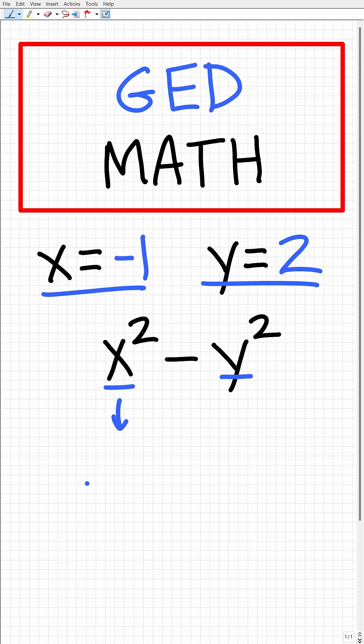So this is how it's going to look: (-1)² - (2)². Always use parentheses.